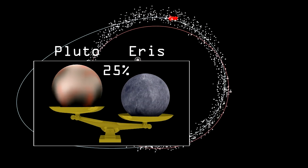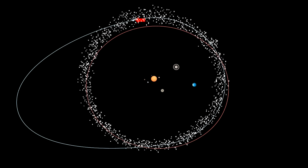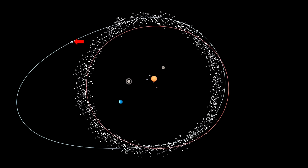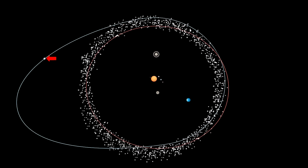The discovery of this more massive object alongside Pluto meant that either Eris should be added to the list of planets, or Pluto should be reclassified to something else.